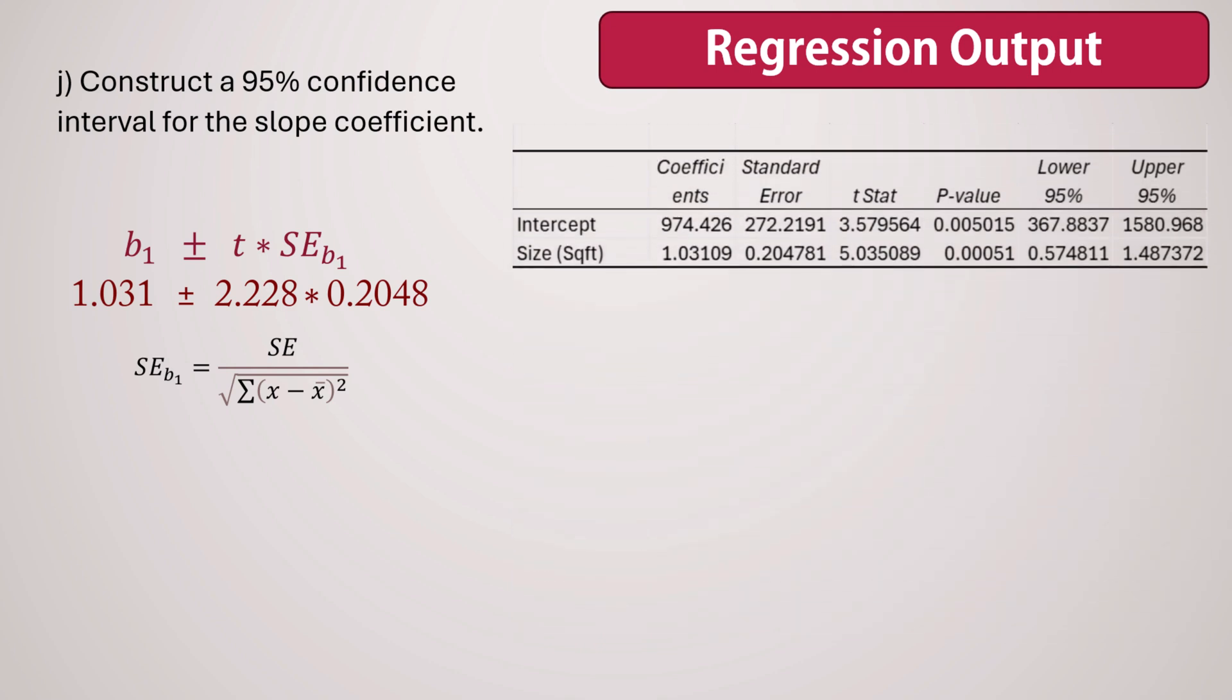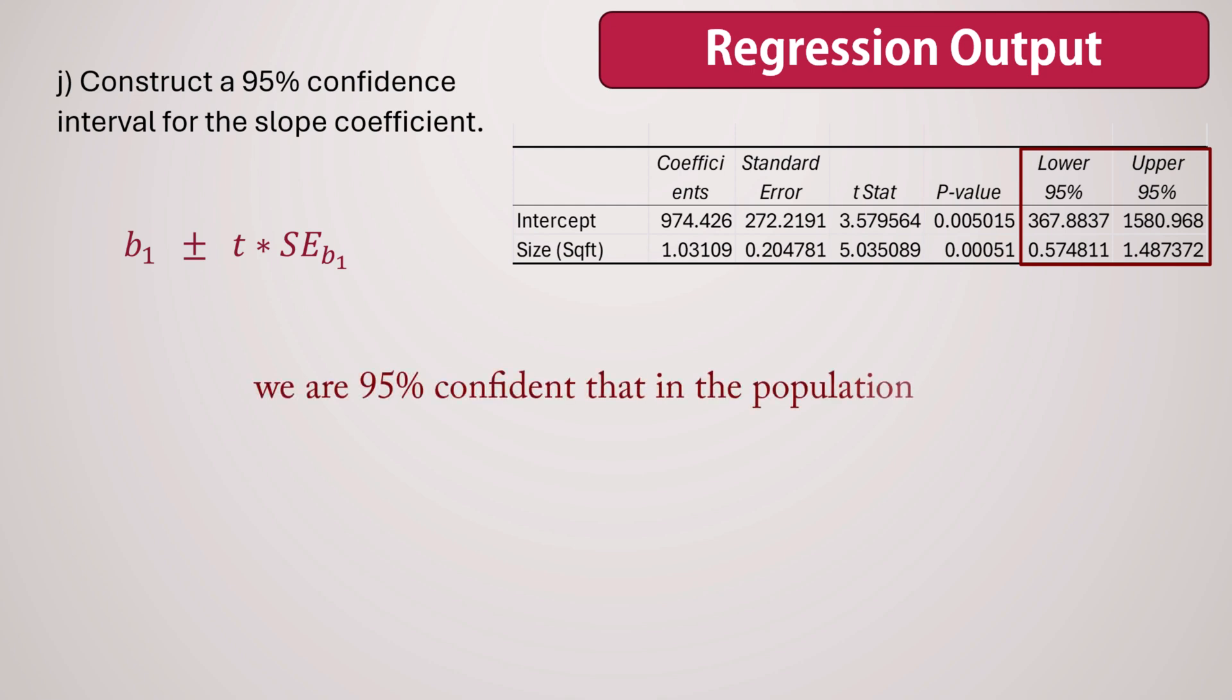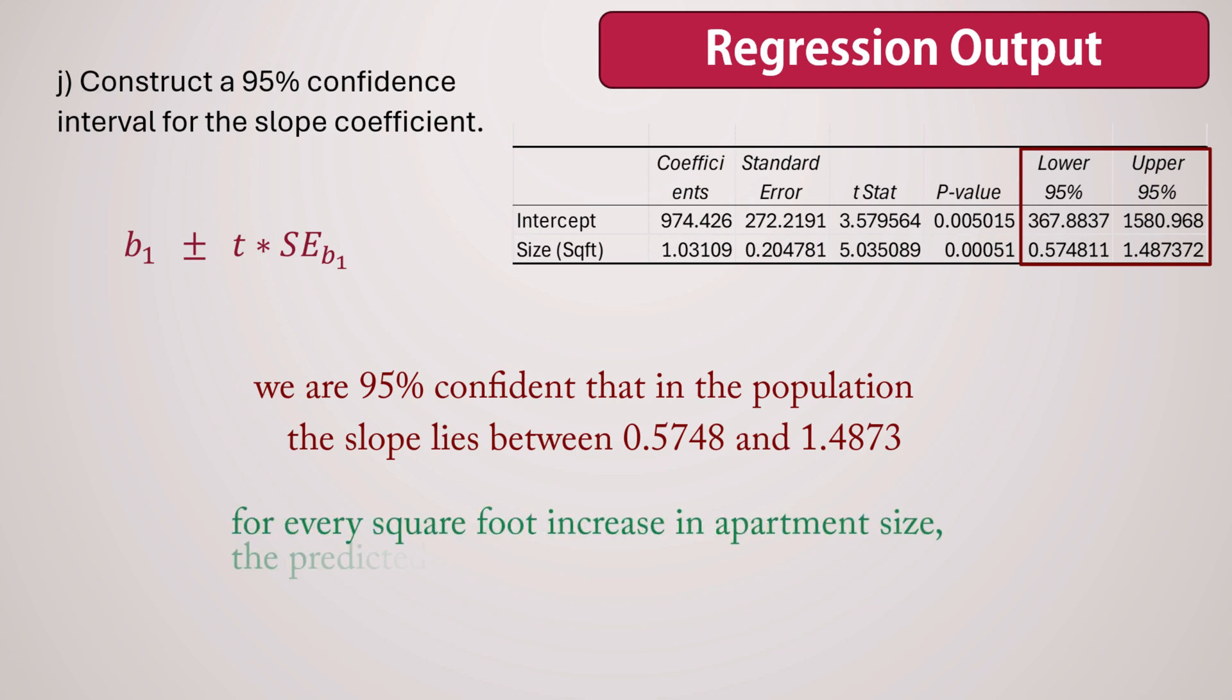To interpret these results, we can say we are 95% confident that in the population, the slope lies between 0.5748 and 1.4873. That is, for every square foot increase in apartment size, the predicted value of rent increases between $0.57 and $1.49.